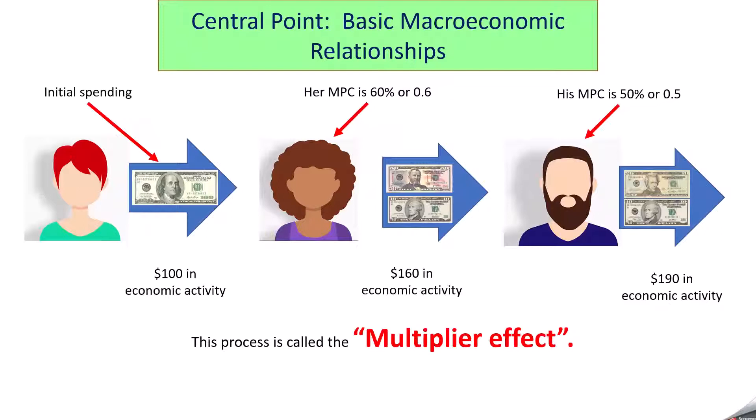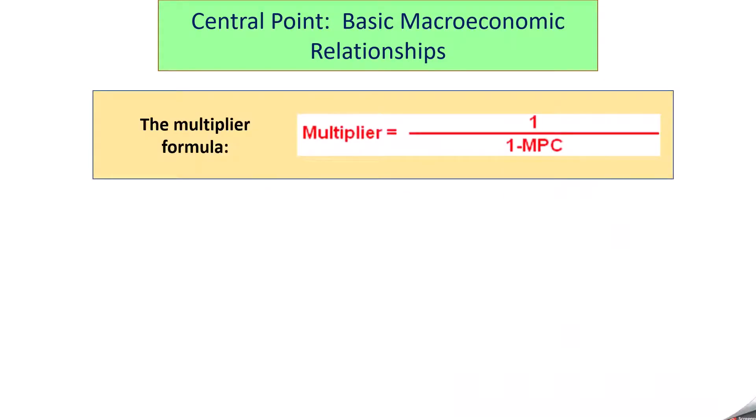And we can quickly figure out how big that $100 would get in terms of economic activity. The way you calculate that is using this formula. There are many ways to calculate the multiplier, but this is the most popular one that I've seen in my time in school and in my career. The multiplier is 1 over 1 minus MPC.